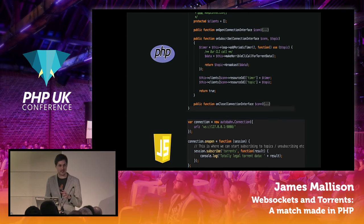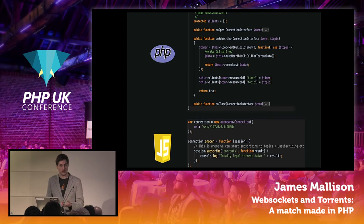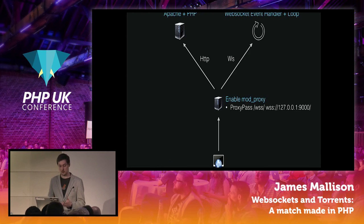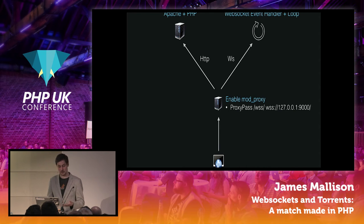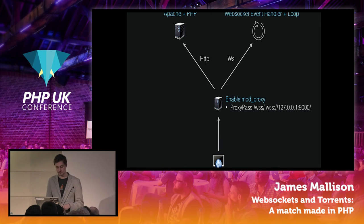Before I continue, I want to show how easy it is to run this event loop and Apache on the same server. The event loop runs on an IP address and a port, so you need to make sure WebSocket calls go to the event handler and HTTP calls go to Apache. All it takes is essentially one line added to your virtual host proxy pass config, stating that WebSocket calls go to the event handler running on a specific port. Or just use Nginx, because it's apparently a lot easier to configure.